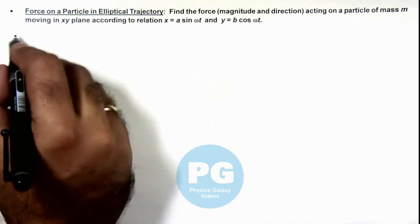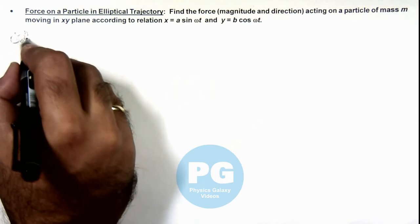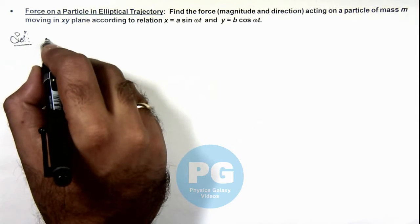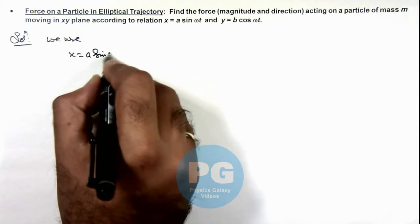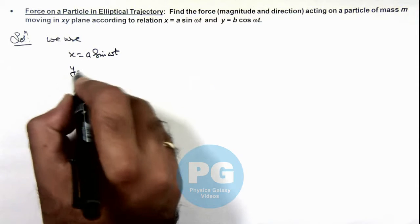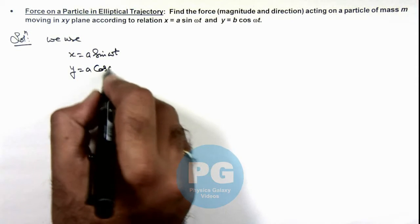Here if we just have a look on these displacements, we have x equals a sine of omega t, and y equals a cosine of omega t.